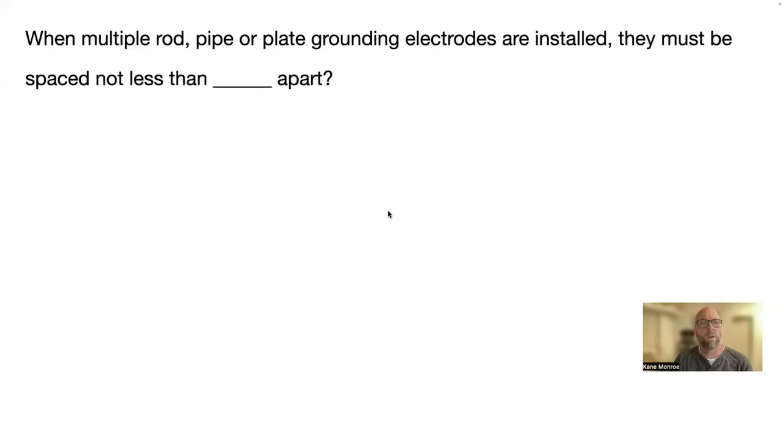All right. When multiple ground rods, pipe, or plate grounding electrodes are installed, they must be spaced not less than blank apart. That is six feet, 250.53 A3.